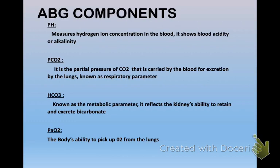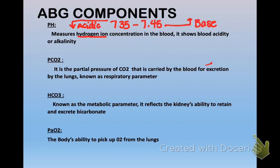Let's talk about the components. Respiratory therapy will usually come and draw your ABGs, and if an art line is left in place you can draw ABGs from that line. Your ABG components include your pH, which measures hydrogen ion concentration in the blood and shows your blood acidity or alkalinity. Normal pH is 7.35 to 7.45.